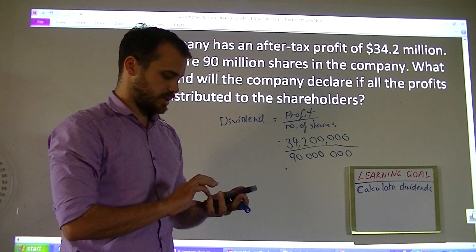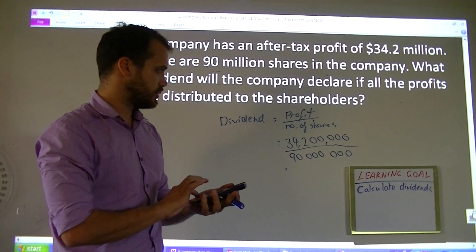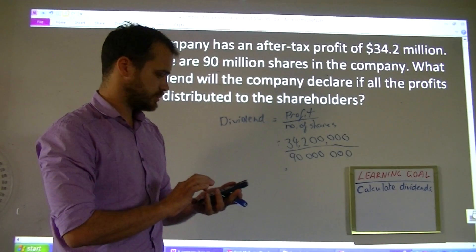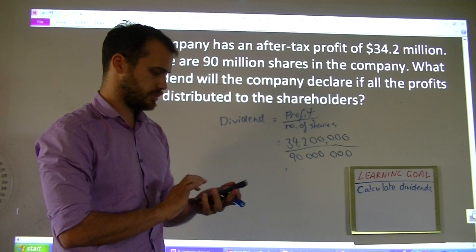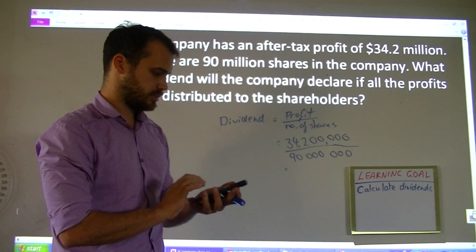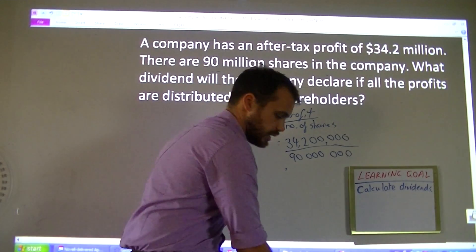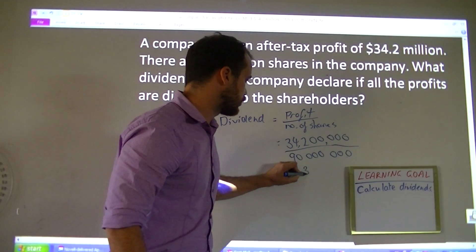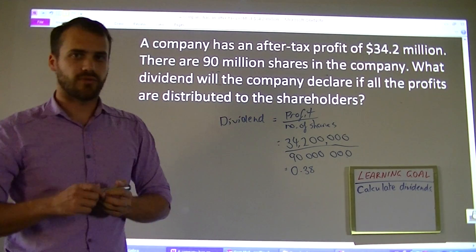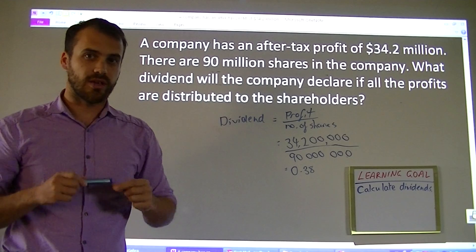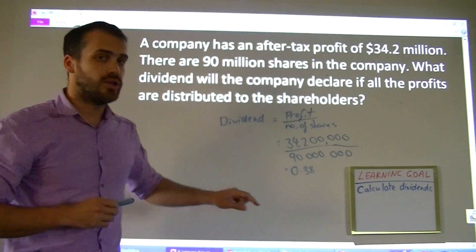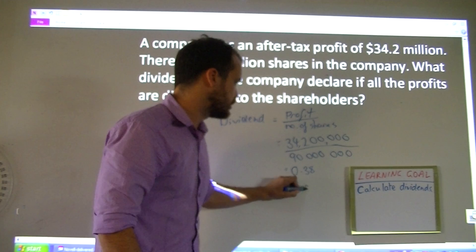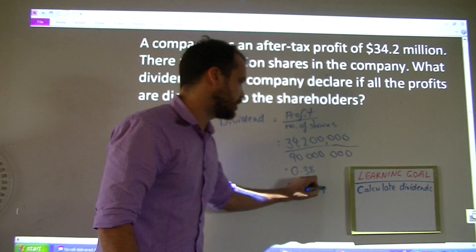Type that into your calculator — again, be careful typing in all the zeros. You'll get an answer of 0.38. That means that for every share that you own in this company, you'll get 38 cents per share.